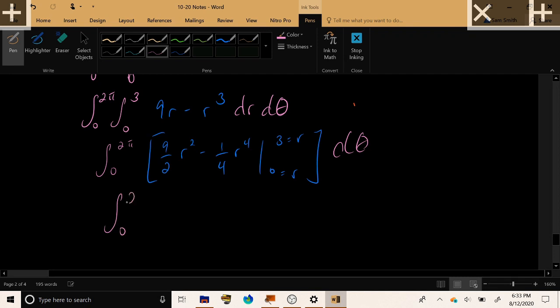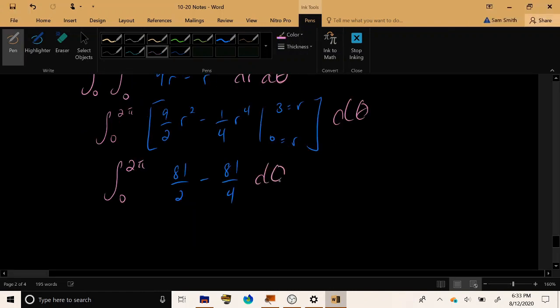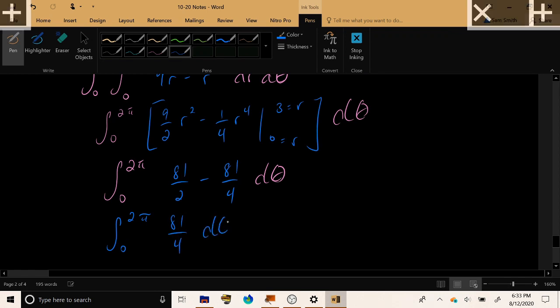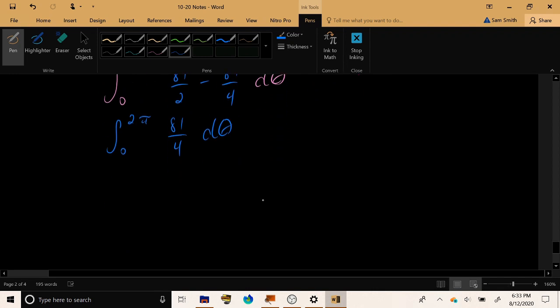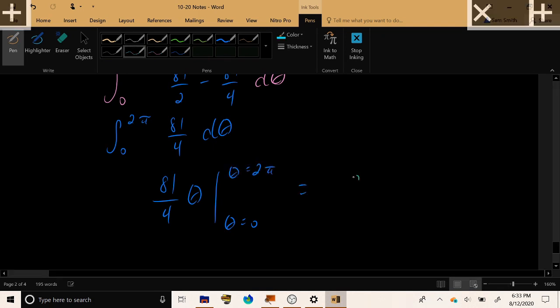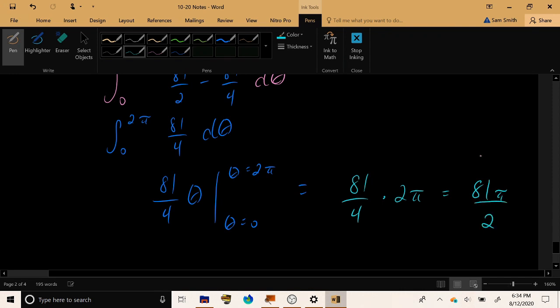We have 9 times 9 over 2 is 81 over 2, minus 81 over 4. So we are integrating 81 over 4 from 0 to 2 pi with respect to theta. Treating theta as the variable of integration, we have 81 over 4 times theta, evaluated from 0 to 2 pi, which gives us a final answer of 81 over 4 times 2 pi, or 81 pi over 2.